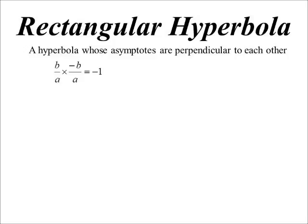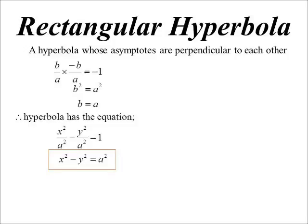So what does that mean? Well, if I multiply the two slopes together, I must get negative 1. So b on a times minus b on a is negative 1, which means b squared equals a squared. It means b equals a. So a rectangular hyperbola will have the equation x squared on a squared minus y squared on a squared is equal to 1. Or if we multiply by the a squared, x squared minus y squared equals a squared.